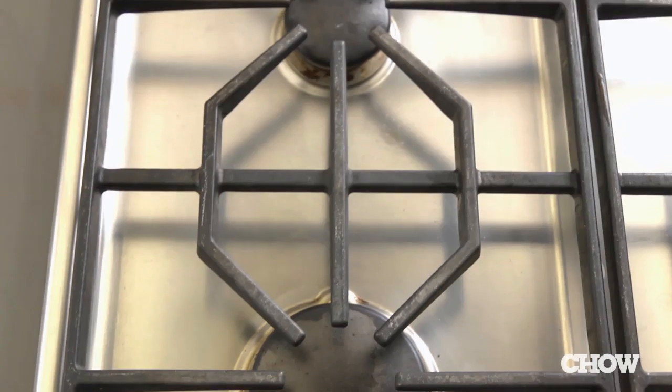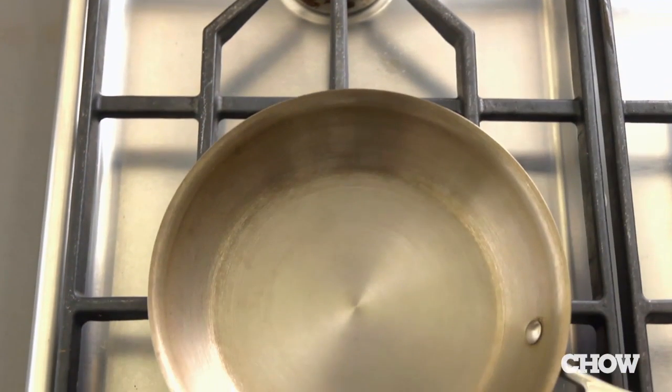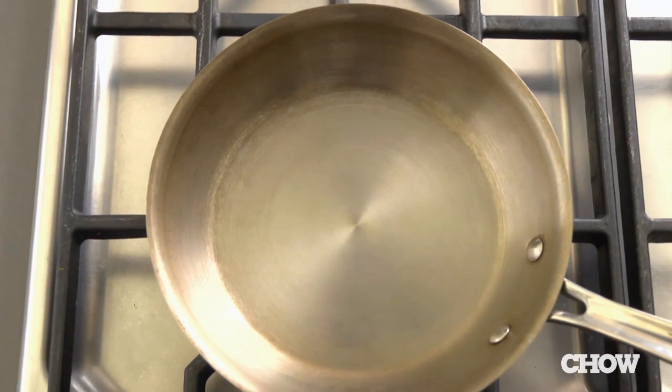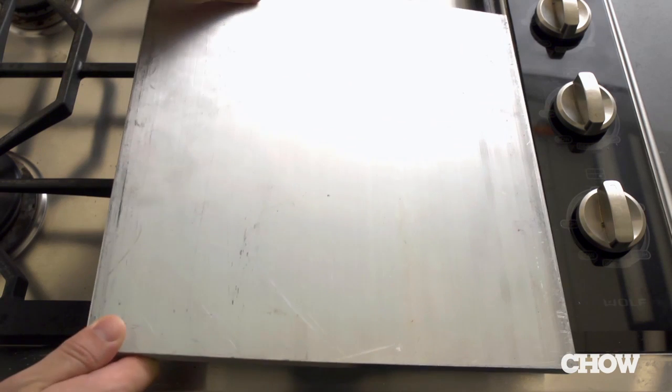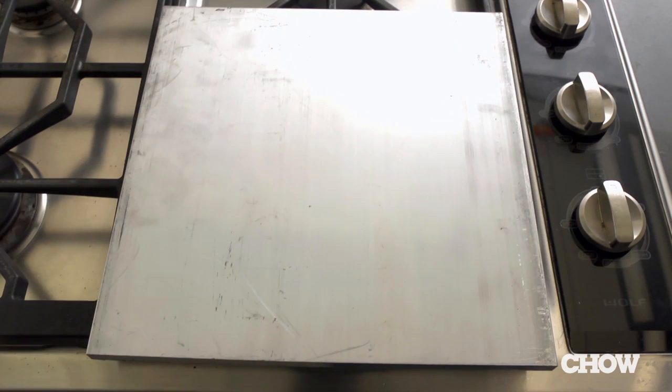Instead, pick a few thick, sturdy pans that are well matched to the size of your burners. But if you really want the ultimate in even cooking, have a metal shop cut a half-inch to inch-and-a-half thick solid block of aluminum and place your pan on top of that. It'll be cheaper than that fancy four-hundred-dollar skillet and it'll give you more even heating on all of your pans.